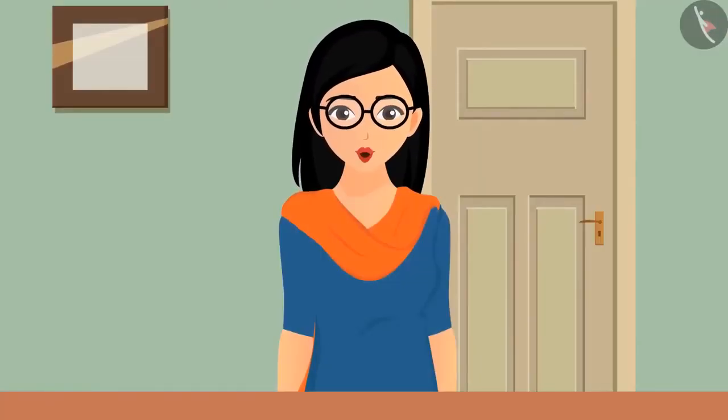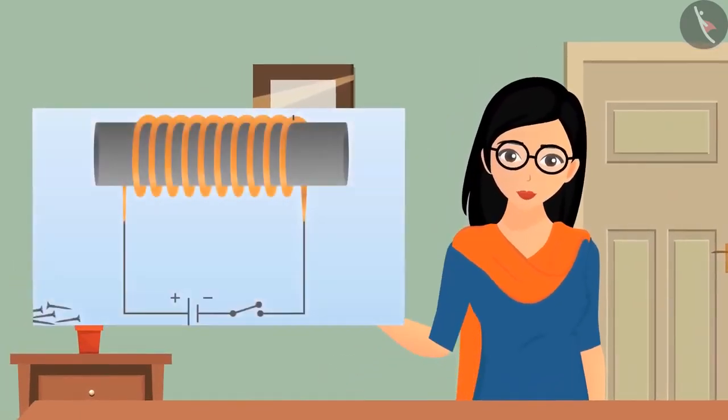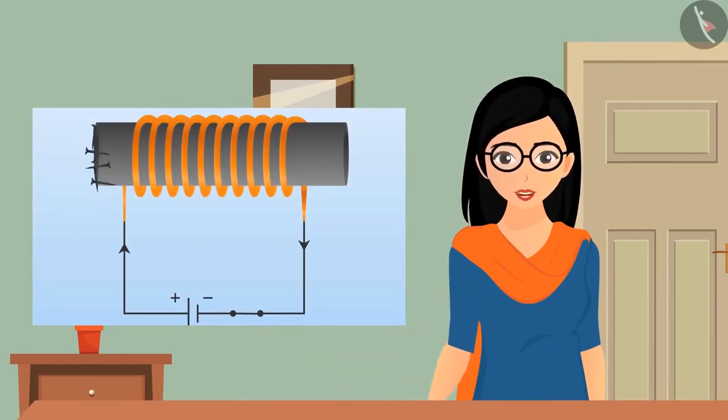Commonly in electric motors, electromagnets are used in place of magnets. Electromagnets can be formed by putting a soft iron core in the coil. This we have already covered in a previous video.